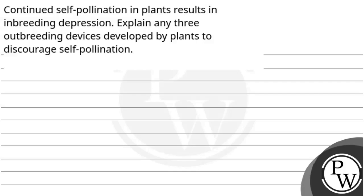Hello! Let's read the question. The question says continued self-pollination in plants results in inbreeding depression. Explain any three outbreeding devices developed by plants to discourage self-pollination.